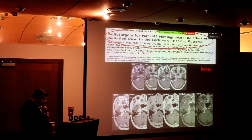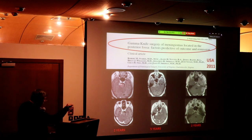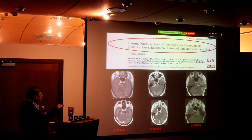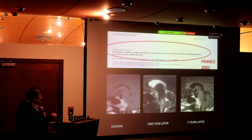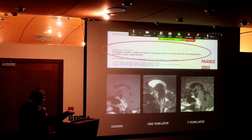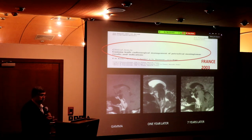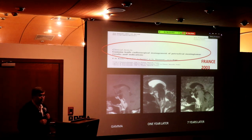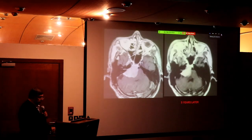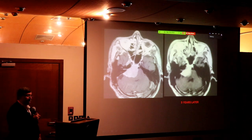Gamma knife cases: two years after, the tumor has shrunk but is still there; five years, tumor still there. Published papers from major centers — Charlottesville Virginia, and John Regis from Marseille — show gamma knife for tumors causing pressure on the brainstem. The gamma knife starts acting after six months and completes its action in three years. You cannot leave pressure on the brainstem like this. One year later — still the same; seven years later — still the same.